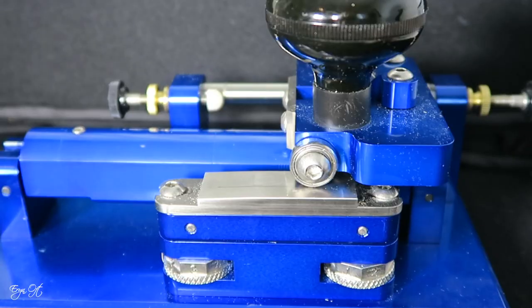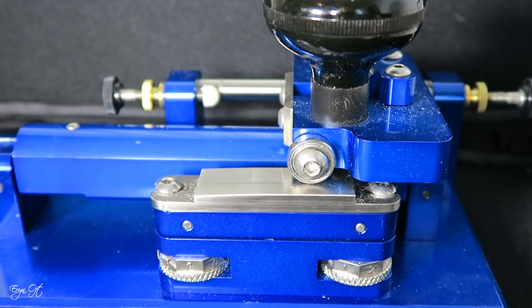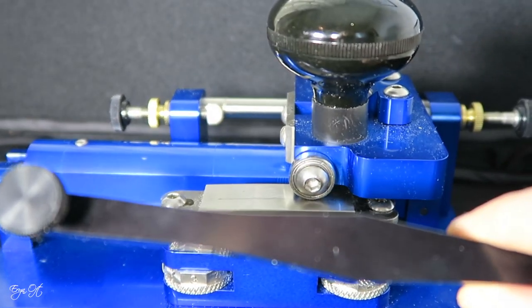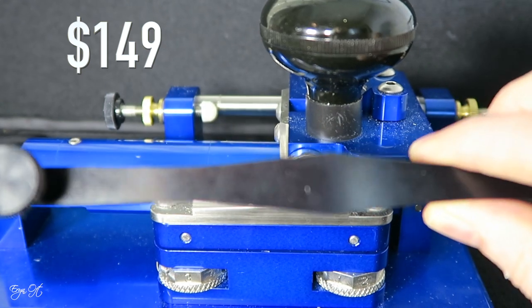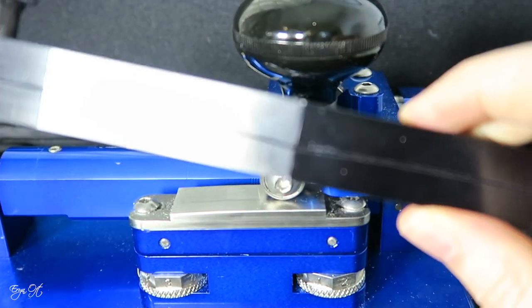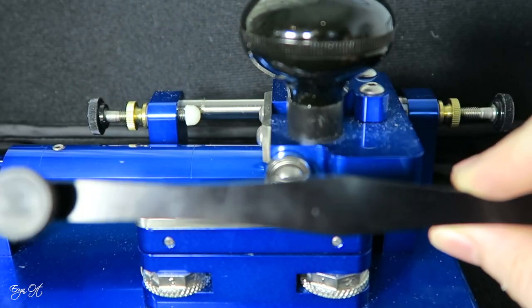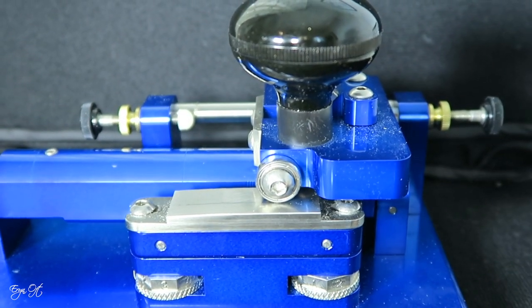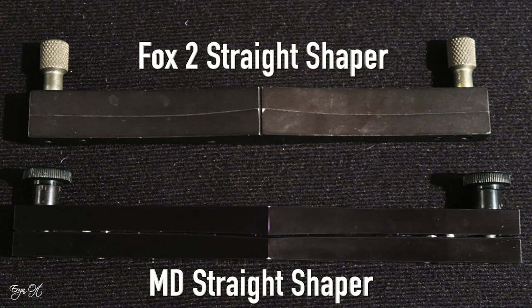The nice perk about the MD profiler is that you can get an MD shaper with it. Now I went ahead and did this. These are straight shapers that come with it. I went ahead and got an MD 2. Now I have to say that I bought this right around the time I first started blogging and there are some differences that go with the MD shaper versus the Fox straight shapers. So the MD shaper 2 is really close to a Rieger 1A or a Fox 2.